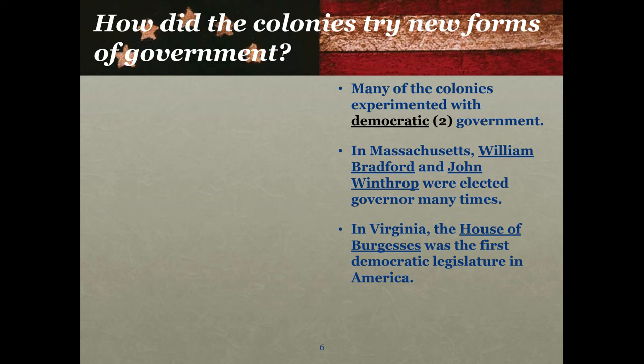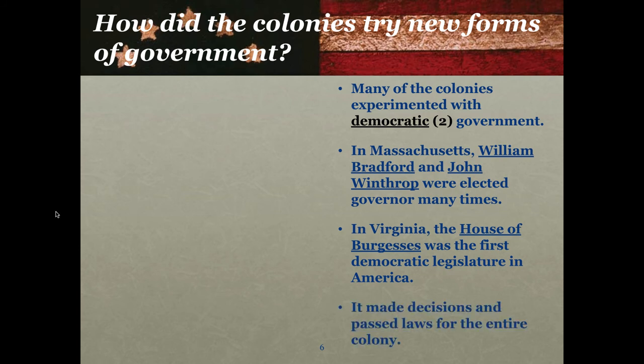That was a big deal. William Bradford and John Winthrop served an executive function in that they carried out the laws, and in Virginia the House of Burgesses served a legislative function in writing the laws. Both were chosen by the people — and to be honest, by people I mean land-owning men. Both the House of Burgesses and these executive leaders made decisions and passed laws for their entire colony without asking the king on the other side of the ocean whether he liked that or not.